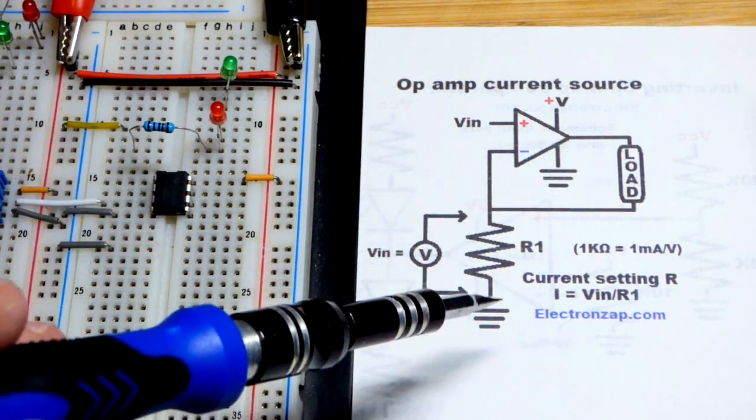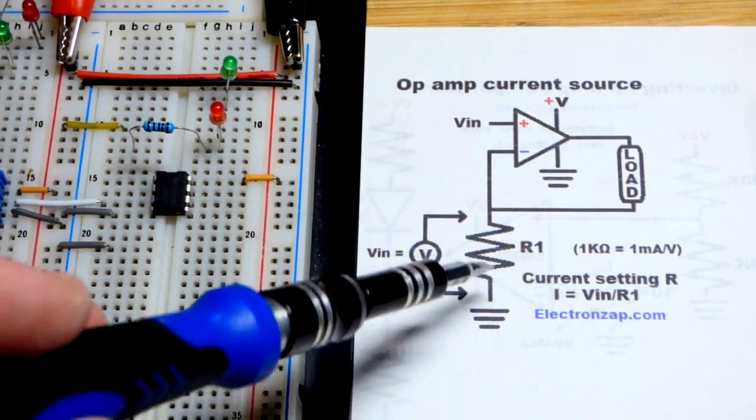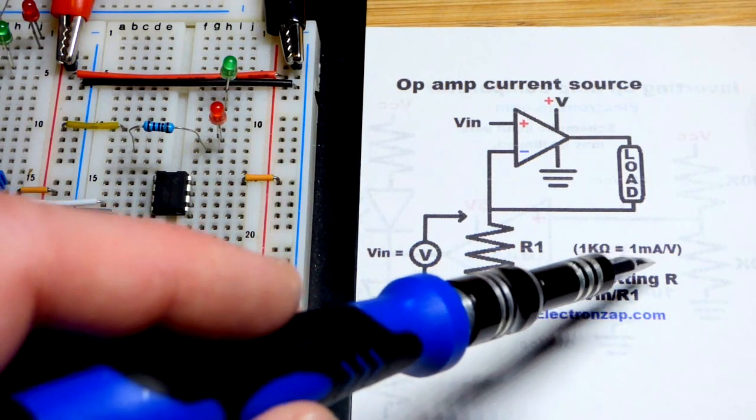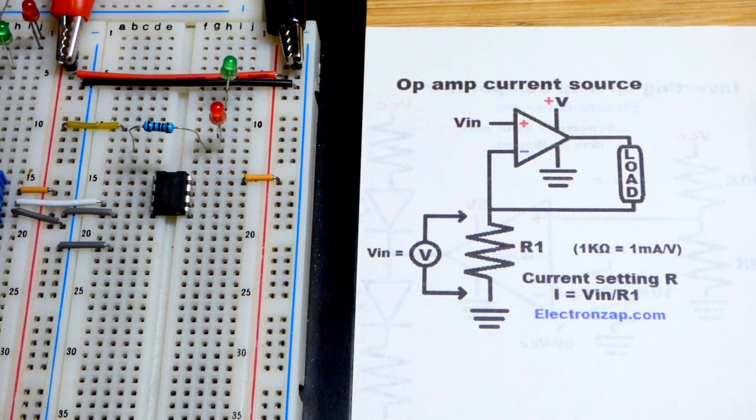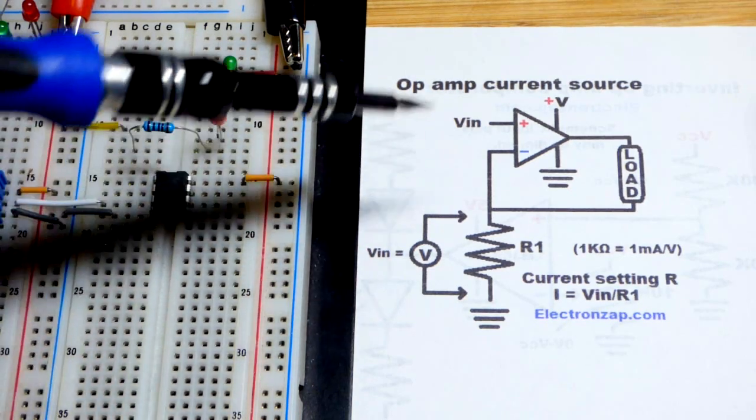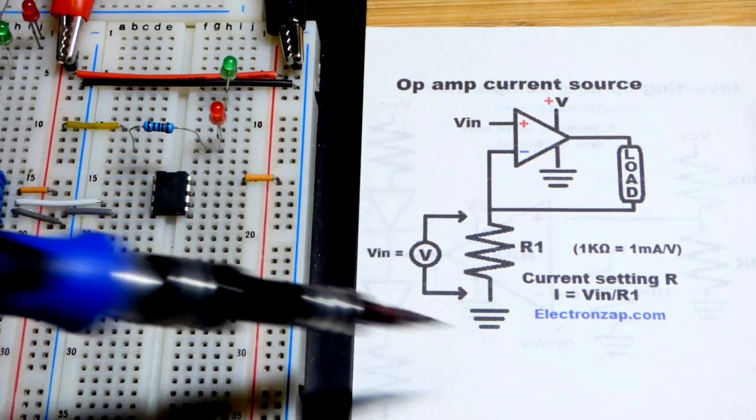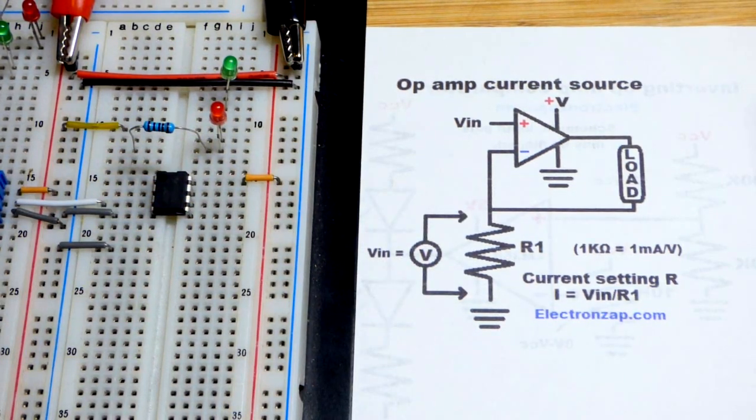Ultimately, the amount of current that will flow will depend on the value of the resistor. We're going to use a 1 kilo ohm resistor, so we'll get about 1 milliamp of current per volt. If we set 5 volts there, we'll get about 5 milliamps of current through here. So hopefully that all made sense.